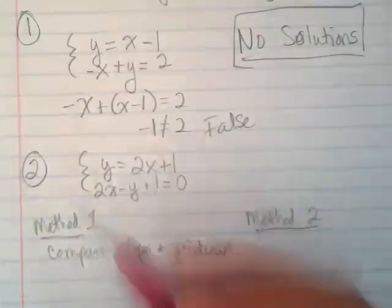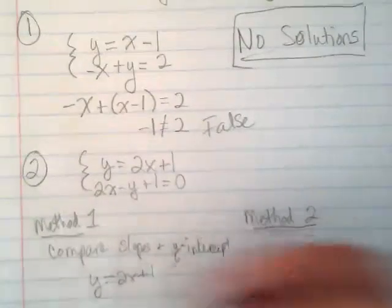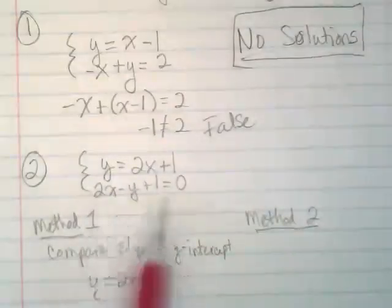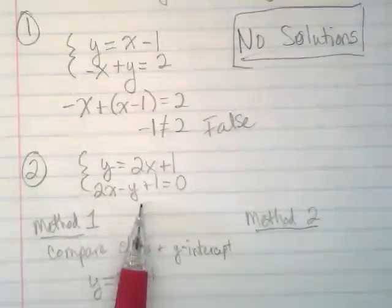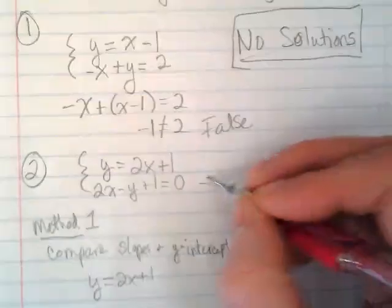The first one already is, so I'm just going to rewrite it down here as y is equal to 2x plus 1. If I put this one into y equals mx plus b form, look what's going to happen.